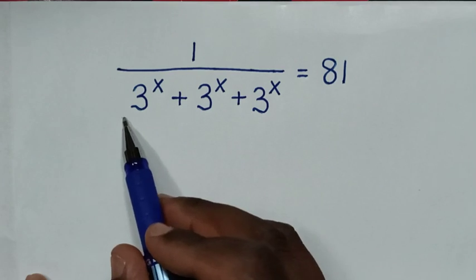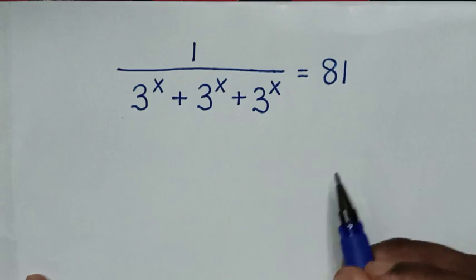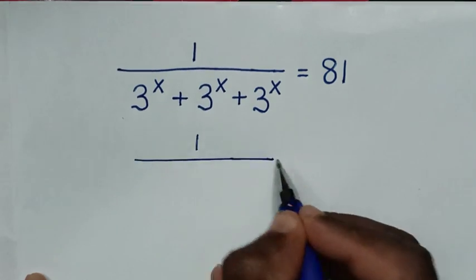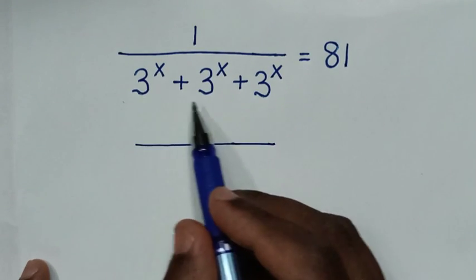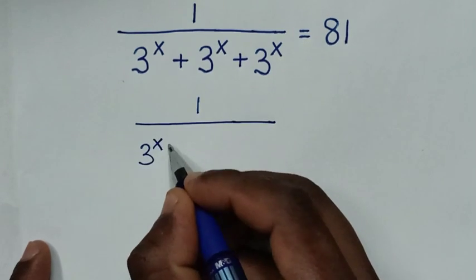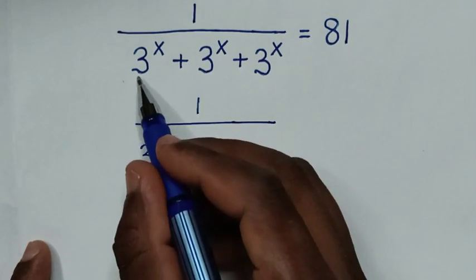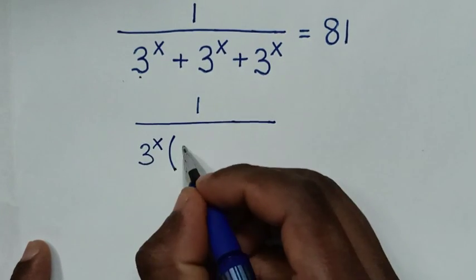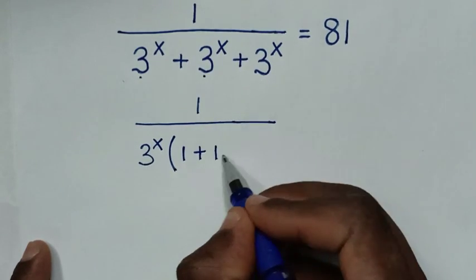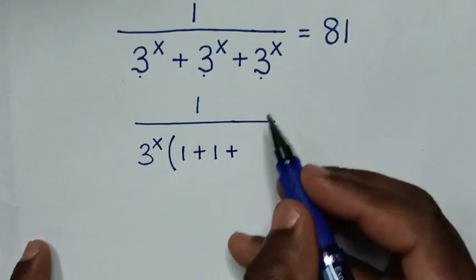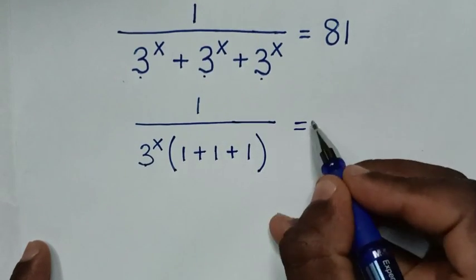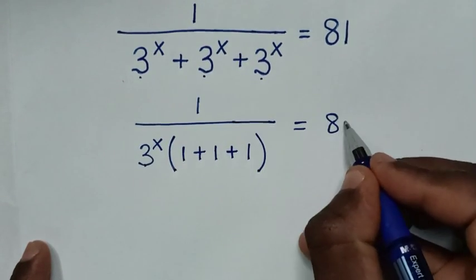To find the value of x from this equation, in the denominator 3^x is common, so we will take 3^x out of the bracket. Then 3^x divided by 3^x is 1, plus 3^x divided by 3^x is 1, in bracket, is equal to 81.